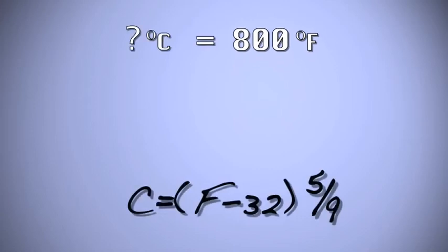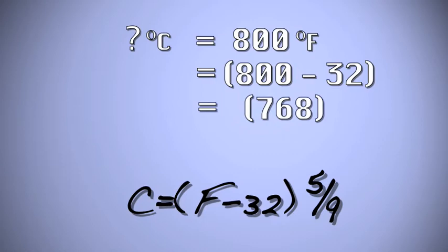To find the Celsius equivalent, subtract 32 from the Fahrenheit temperature, 800, and multiply by 5 ninths. That's nearly 427 degrees Celsius.